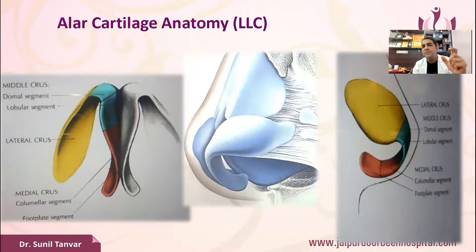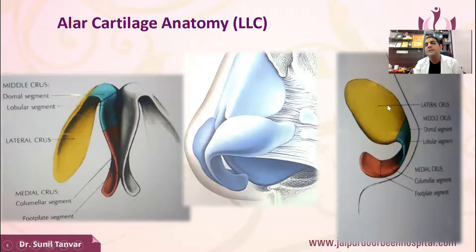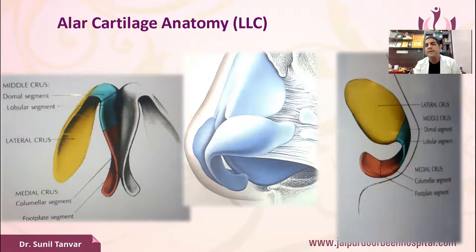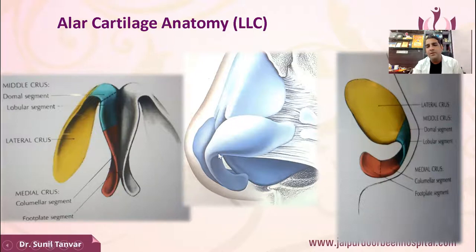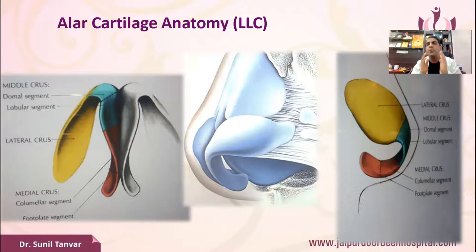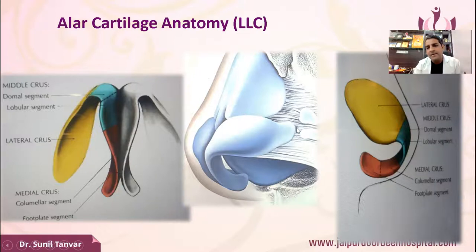The last part of the LR cartilage is the lateral crus — the widest part, giving maximum volume to the tip. The LR cartilage has two margins: the cephalic margin and the caudal margin. Regarding orientation, the medial end and lateral end of the lateral crus are important. Normally the lateral end of the lateral crus is oriented towards the lateral canthus at approximately 45 degrees from the midline.